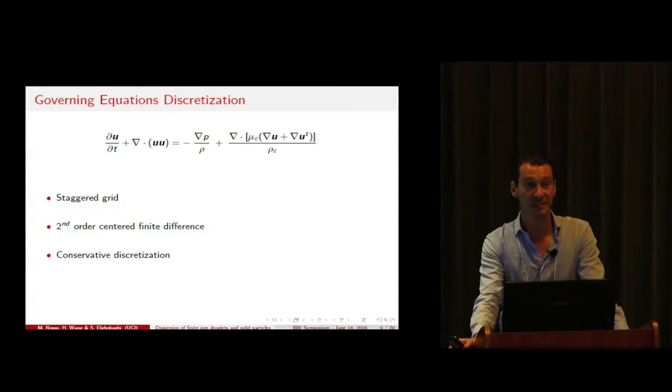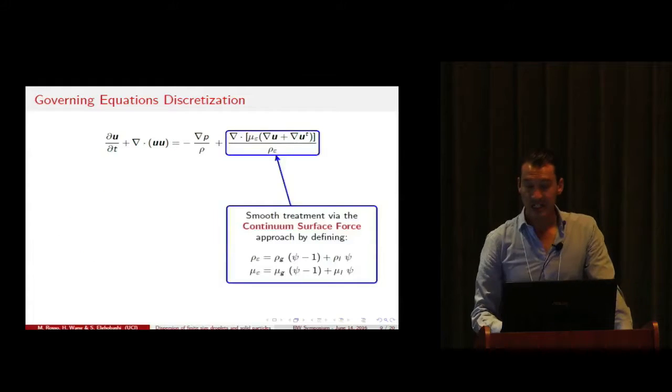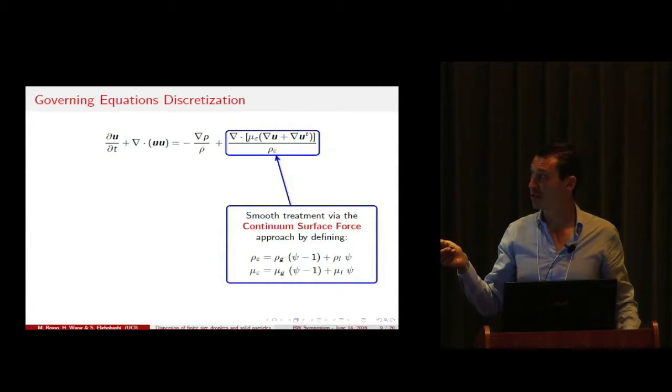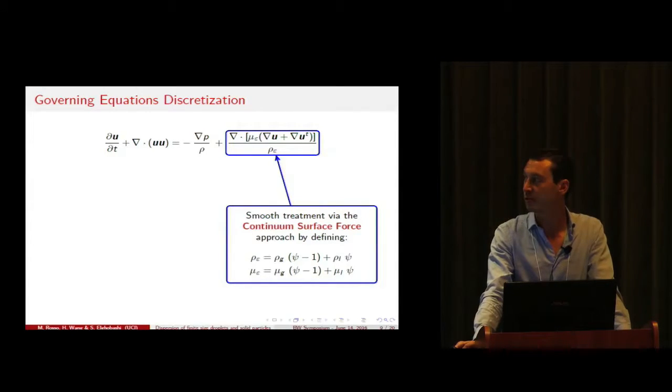The governing equations have been discretized on a staggered grid by using second-order centered finite differencing and a conservative discretization of all the equations involved. The jumps in the viscous term of the Navier-Stokes equation have been treated in a smooth fashion by using a continuous surface force approach.